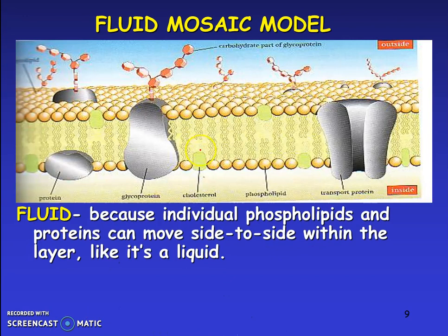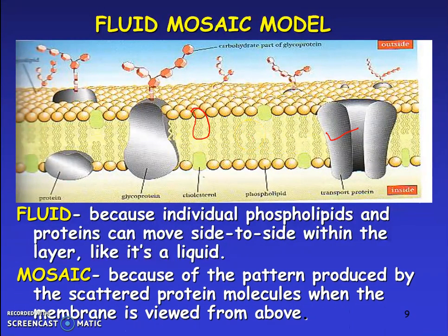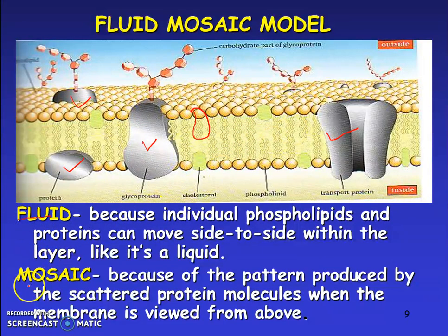When talking about the cellular membrane, we refer to the fluid mosaic model — made up of two components. It is called 'fluid' because individual phospholipids and proteins can move side to side within the layer like a liquid. It is called 'mosaic' because of the pattern produced by the scattered protein molecules distributed throughout the phospholipid layers.